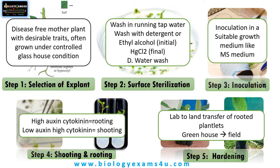To summarize, the five steps in plant tissue culture are: first, selection of explant from a disease-free plant with desirable traits; second, thorough surface sterilization with water, ethyl alcohol, and mercury chloride, all done inside a laminar air hood; third, inoculation into a suitable medium like MS medium or White's medium; fourth, shooting and rooting by changing hormonal combinations — high auxin and low cytokinin favors rooting, while low auxin and high cytokinin favors shooting; and finally, hardening, where the developed plant with roots and leaves is gradually exposed from milder conditions to normal field conditions.